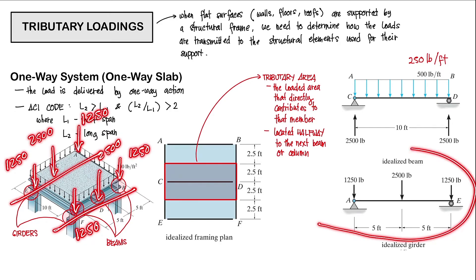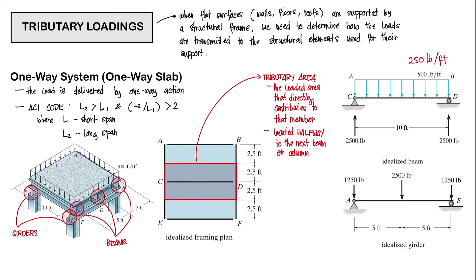Once we have the loadings on our girders from the idealized structure, we can further solve the reactions of the girders, and those reactions would in turn be carried by our columns.